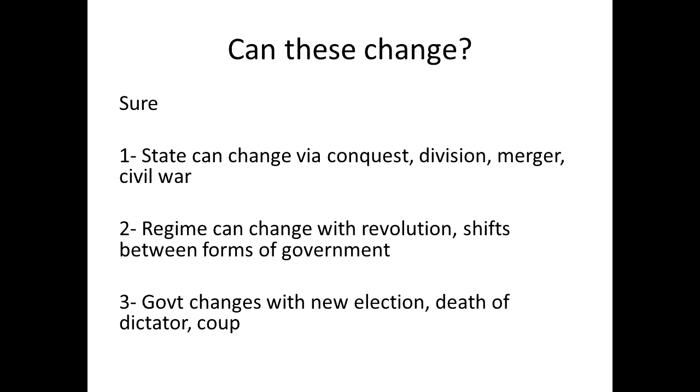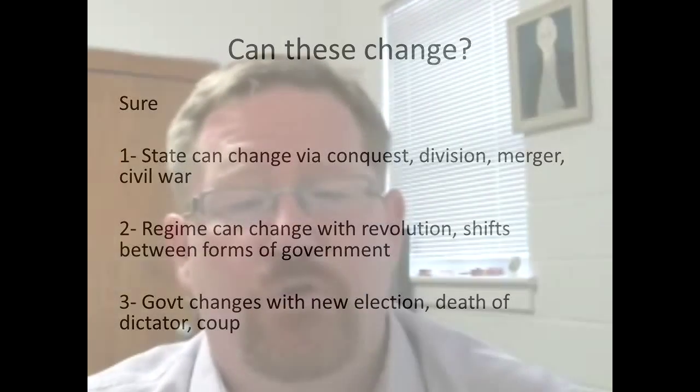The pieces — who the governor is, who the legislators are — can be different. Can these things change independently of one another? Yes. A state can fall apart, be conquered, divide into two — like Serbia emerging from the former Yugoslavia — or two states can merge. Regimes can transition from autocracy to democracy or vice versa. A revolution can create a new government. The pieces can change too: a president can be re-elected, a dictatorial leader replaced by a coup or by a successor.